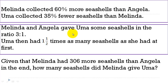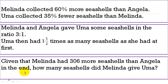The second part is: Melinda and Angela gave Uma some seashells in the ratio 3 to 1, and Uma then had one and a half times as many seashells as she had at first. And the last part: given that Melinda had 306 more seashells than Angela in the end, how many seashells did Melinda give Uma?